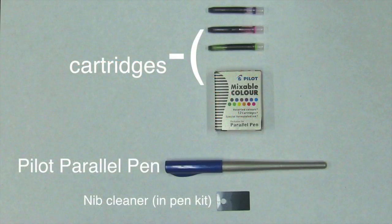The Pilot Parallel Pen kit includes the pen itself, a small nib cleaner (a very thin piece of plastic), and ink cartridges. Although these cartridges are convenient to use, the ink itself is very thin and will often feather out or bleed out on some papers.